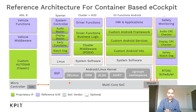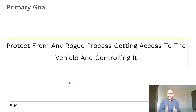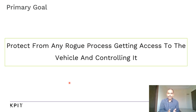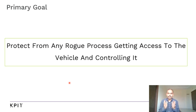Now let's look at the primary goal we started with: protect any rogue process from getting access to the vehicle and controlling it. With our container-based architecture, irrespective of whatever isolation techniques we have, we want to protect any process from breaking out of the containers or process boundaries and getting into the root namespace or trying to interact with the vehicle. Even if a process breaks out, we want to limit the damage it can do.